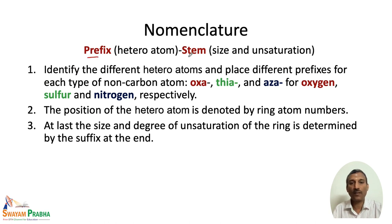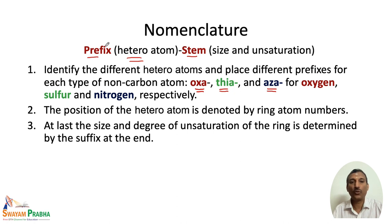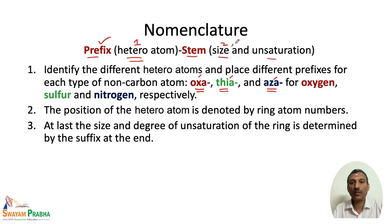The prefix is based on the heteroatom. When oxygen is present we give the prefix oxa; when sulfur is present we give thia; and when nitrogen is present we give aza. The stem is the second component, representing size and unsaturation. So the three rules are: heteroatom type (prefix), ring size, and saturation state (stem).